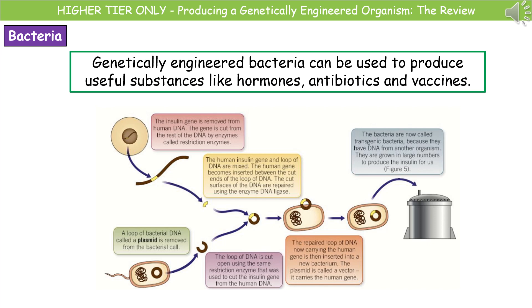The way we remove the gene is by using a special kind of enzyme called a restriction enzyme. In the diagram, we're removing the human insulin gene from the DNA by using a restriction enzyme to cut it. We also remove a plasmid from our bacterial cell, which is going to be our host at the end, and we use the same restriction enzymes to cut the plasmid.